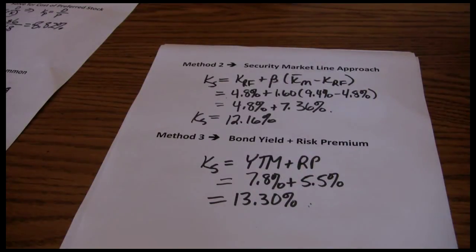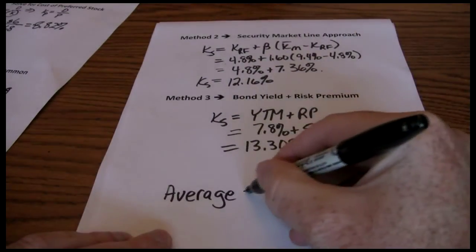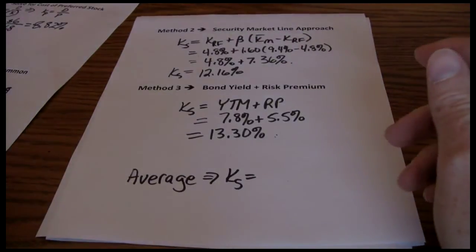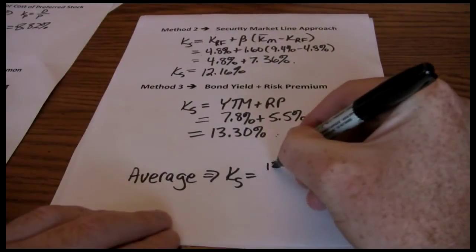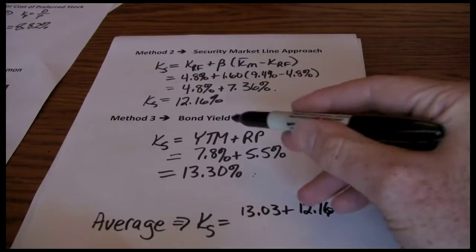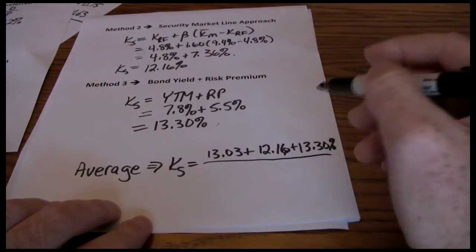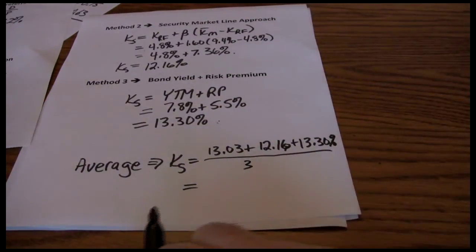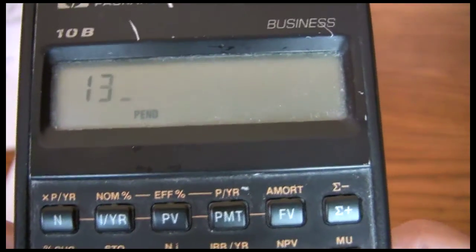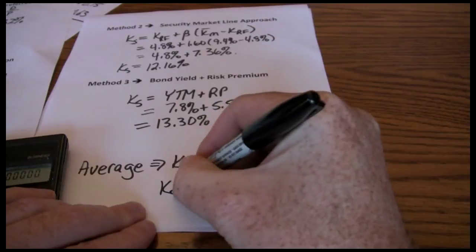If our company has not issued any bonds, we don't know what the yield to maturity would be and therefore we wouldn't be able to use this model. So we have three models. None of them work 100% reliably. So what our solution is is to just take an average of the three. So we're going to average out our three methods. We say the required return is equal to 13.03% from our dividend valuation approach plus the 12.16% from our security market line approach plus the 13.3% from our bond yield plus risk premium approach. Average those out so we're adding them up and dividing by three. 13.03% plus 12.16% plus 13.3% divided by three gives us 12.83% as our cost of common stock financing.